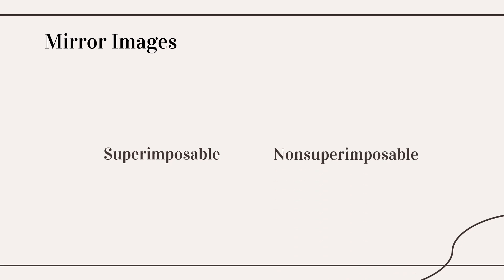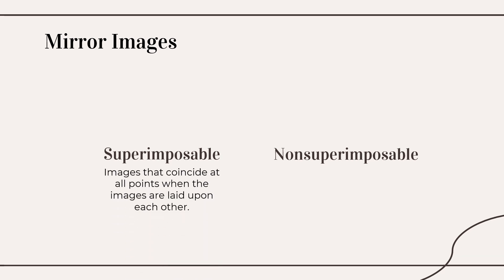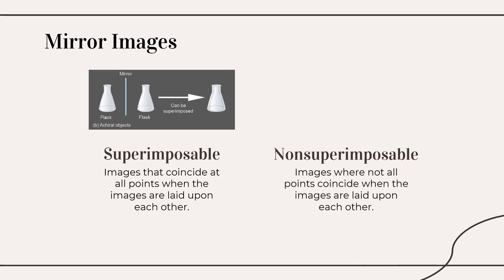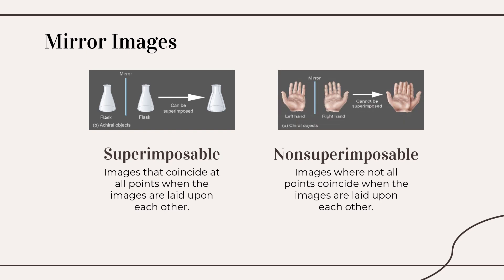We define superimposable mirror images as images that coincide at all points when the images are laid upon each other, just like a flask which has no markings — the mirror image can be superimposed onto the original image. Non-superimposable mirror images are those images where not all points coincide when laid upon each other, just like our left and right hands.